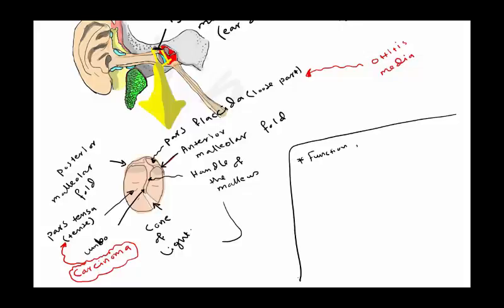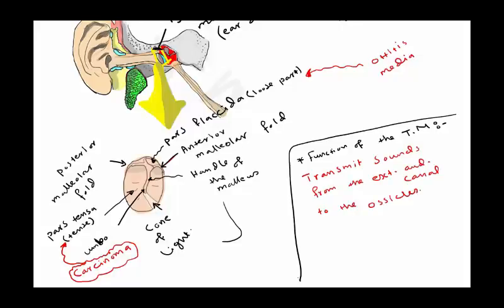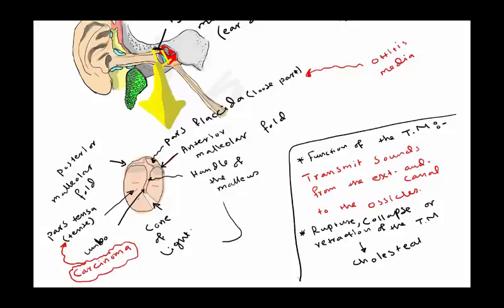The function of the tympanic membrane is for transmission of vibrations from the external auditory canal to the middle ear and to the ossicles. If there is any rupture, collapse, or retraction of the tympanic membrane, it will lead to conductive hearing loss or cholesteatoma.